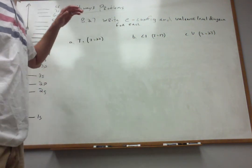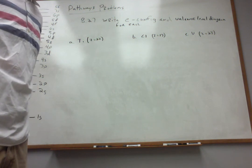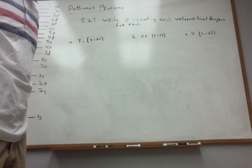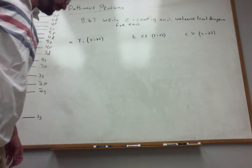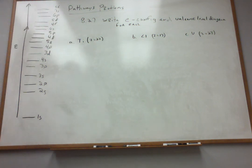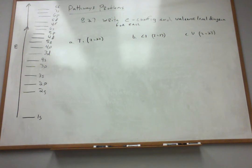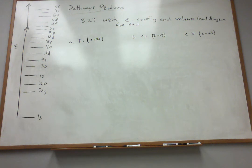Let's work problem 8.27. It's another problem about writing the electron configurations and the valence level diagrams, including the boxes and arrows, for each of these elements. I keep coming back to this — I'll probably do another one or two of these problems for ions, because this topic is really one of the most important things you can learn in this chapter. It's a three-part problem.